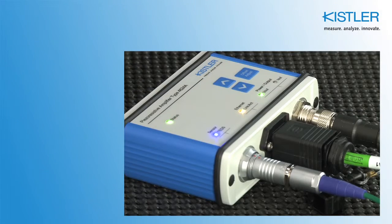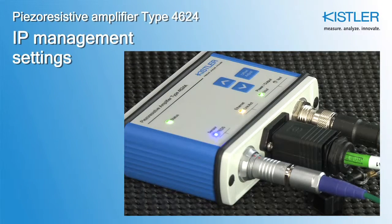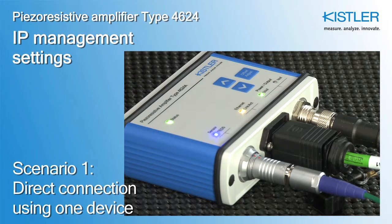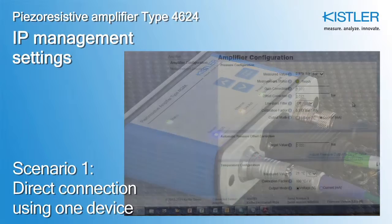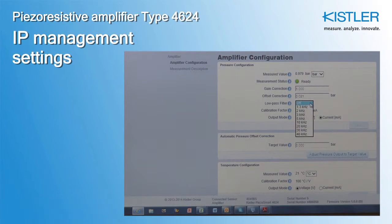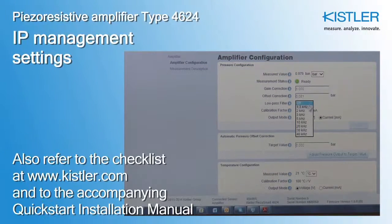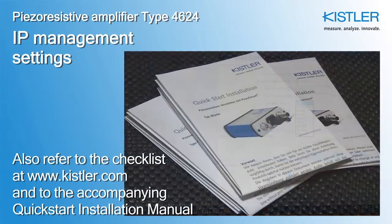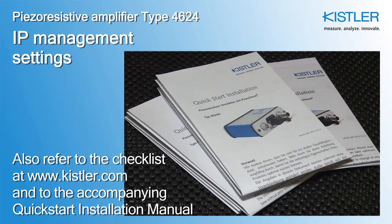This tutorial explains scenario 1 of how to set up the Ethernet connection and IP parameters to use the amplifier's web interface. Also refer to our checklist at Kistler.com and the Quick Start Installation Manual.